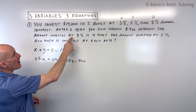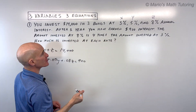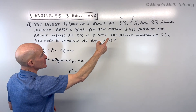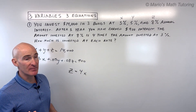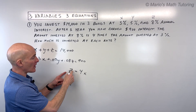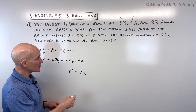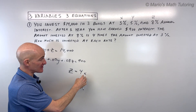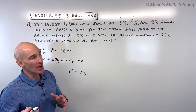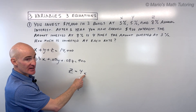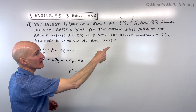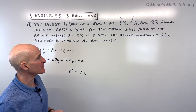The third equation: the amount invested at 8% is 4 times the amount invested at 3%, so Z equals 4X. Sometimes students mistakenly reverse this and write 4Z equals X. What you're really doing is quadrupling the smaller amount to equal the larger amount at 8%. You can verify this by picking a number like $1,000 — four times $1,000 is $4,000, and indeed the 8% investment is larger.